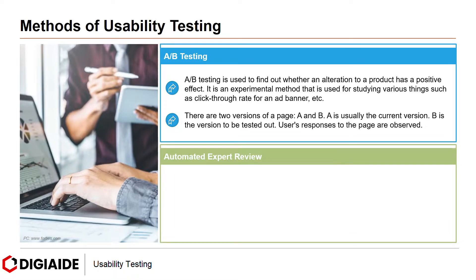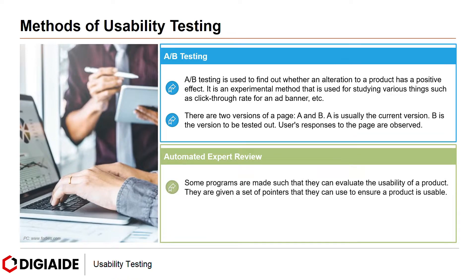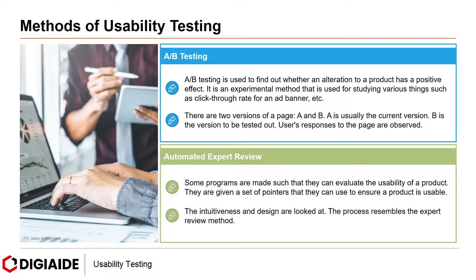Next, Automated Expert Review. Some programs are made such that they can evaluate the usability of a product. They are given a set of pointers to ensure a product is usable. The intuitiveness and design are looked at. The process resembles the expert review method. Although using programs is more time-intensive and results are more consistent, human experts on the other hand offer more thorough reviews and understanding.